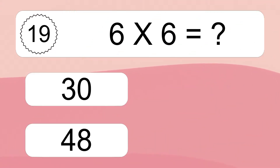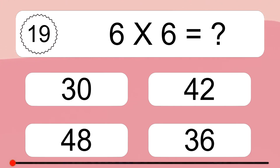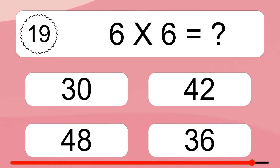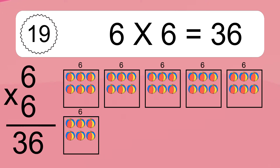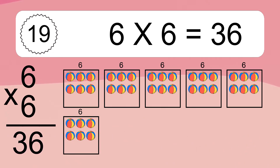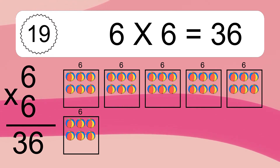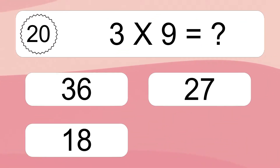6 times 6 equals what? 6 times 6 equals 36. We have 6 boxes and each box has 6 colorful balls inside. If you count all the balls in all the boxes together, you will have 6 times 6 balls. This equals 36 balls.